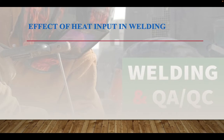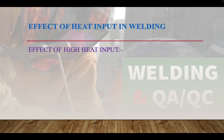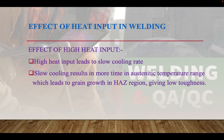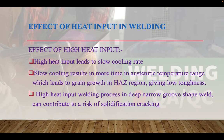Now let us discuss the effects of heat input in welding. If heat input is high, it leads to a slow cooling rate — the higher the heat input, the slower the cooling rate. Slower cooling rates result in more time in the austenitic temperature range, which leads to grain growth in the heat-affected zone, giving low toughness. Additionally, high heat input welding and deep narrow groove-shaped welds can contribute to a risk of solidification cracking.